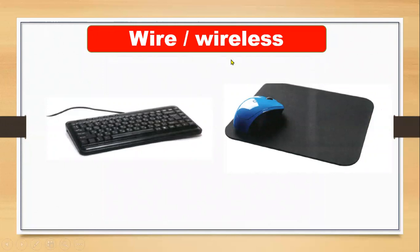We also discussed wired and wireless devices. The keyboard uses a wire, so we call it a wired device. This mouse uses signals, so we call it a wireless device — it works without a wire. So the keyboard works with a wire, and the mouse works without a wire.